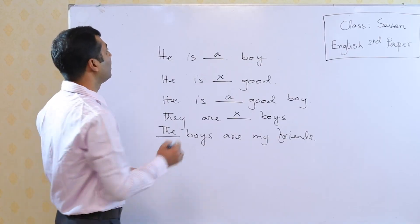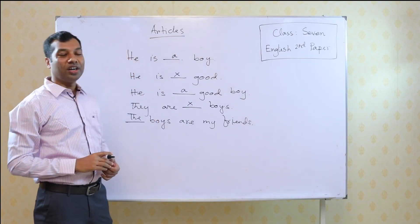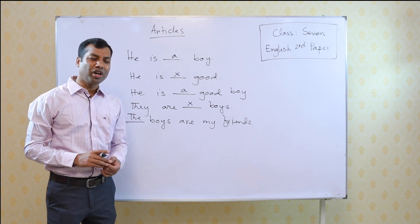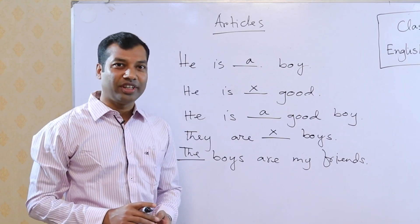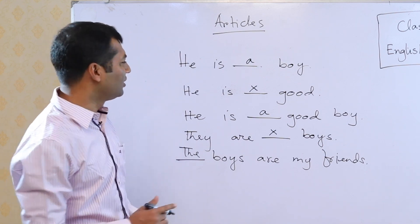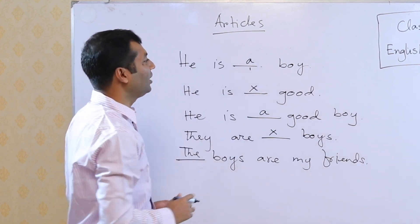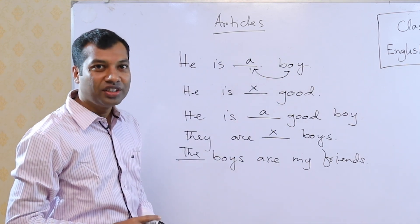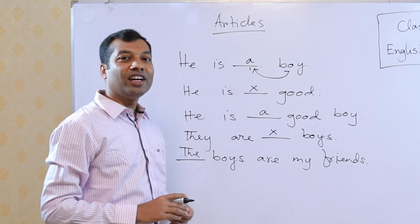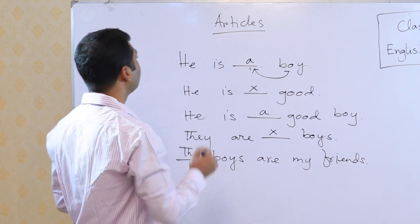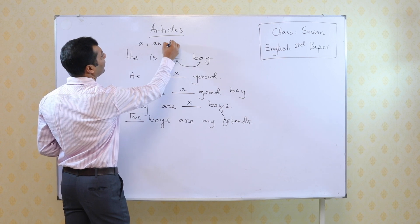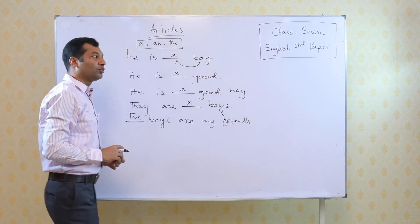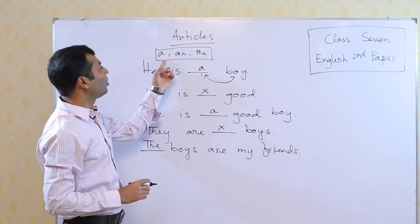Yes, we are going to learn articles. So as we are going to learn articles, at first we have to understand what an article is. I think as you learned about articles in class 6, you know about them at least a little. Articles are the words which take place before the noun and indicate whether the noun is definite or indefinite. There are three articles in English: they are a, an, and the. These are the three articles we use in English language.